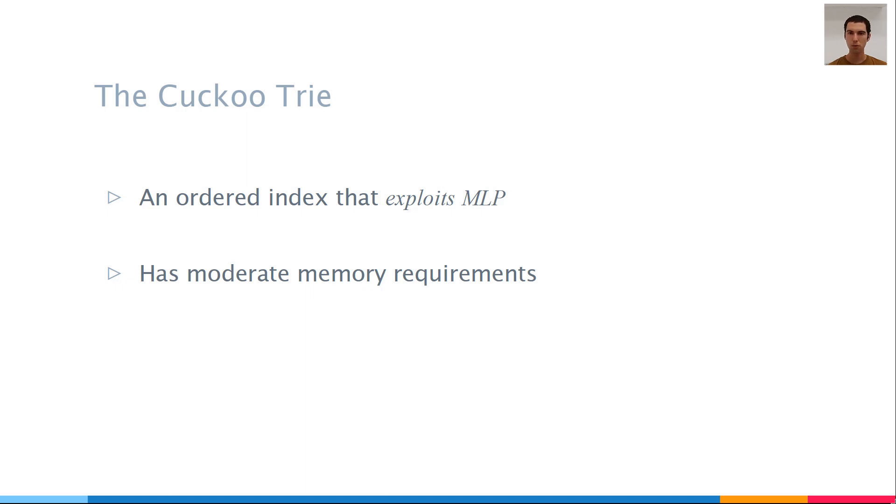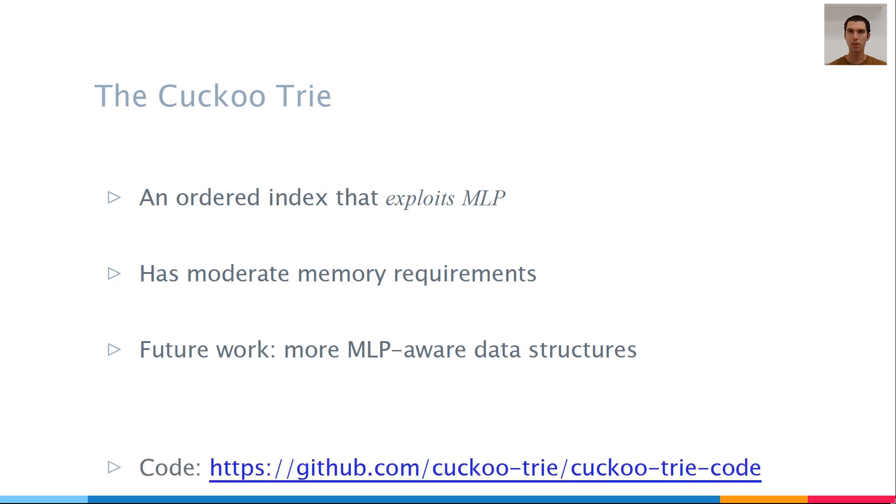To conclude, the cuckoo trie is an ordered index that uses MLP for better performance, but does it without consuming a lot of memory. As future work, we believe that this idea of using MLP can be used to accelerate other data structures as well. Thank you for listening.